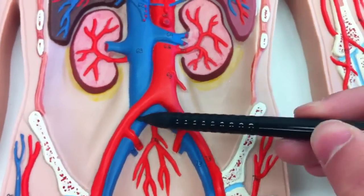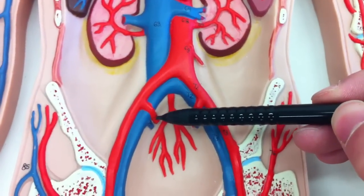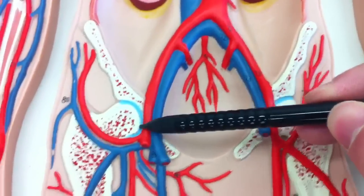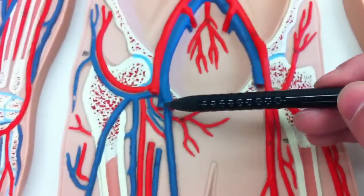You have the common iliacs, internal iliac and the external iliacs, which comes down. You can't see it, but it's cut off.